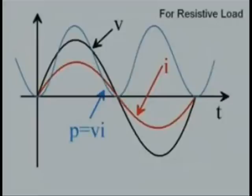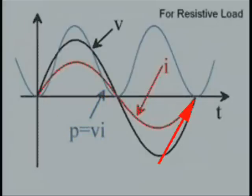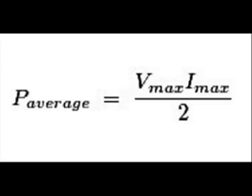Now let's plot this expression of the power waveform along with the voltage and current waveforms in the same figure. Here you see, the power waveform does not have any negative part, although the corresponding voltage and current waveforms do have equal positive and negative parts. Now let's find the average value of this power by integrating the power waveform equation from 0 to 2π and dividing it by 2π. This will ultimately come as Vmax·Imax/2.